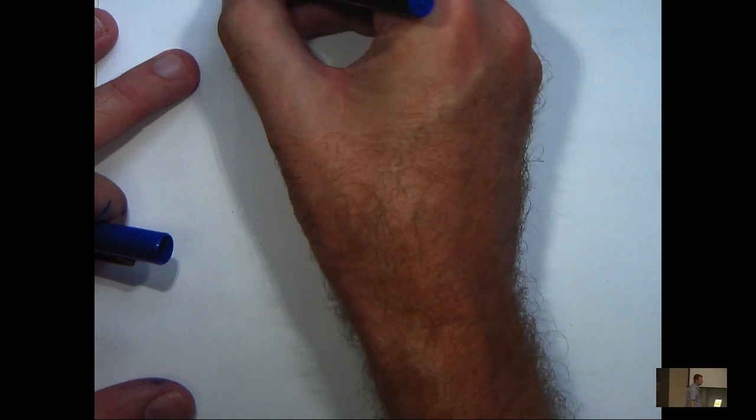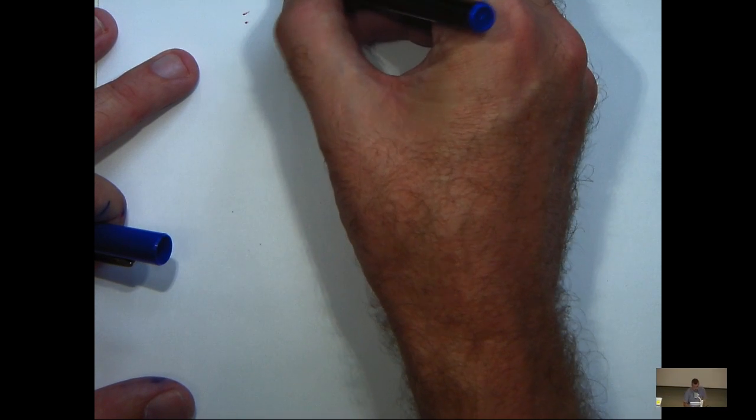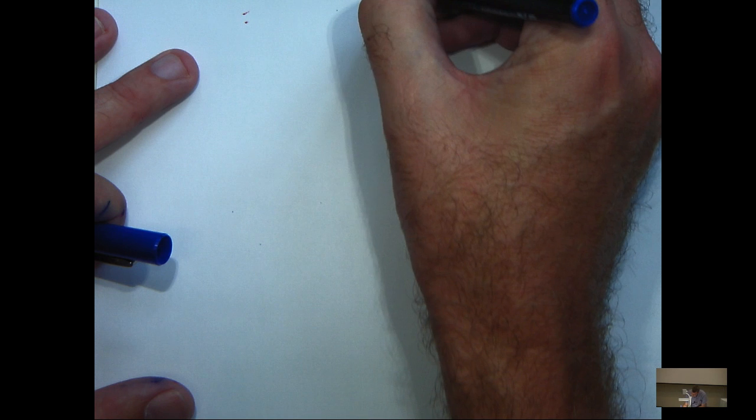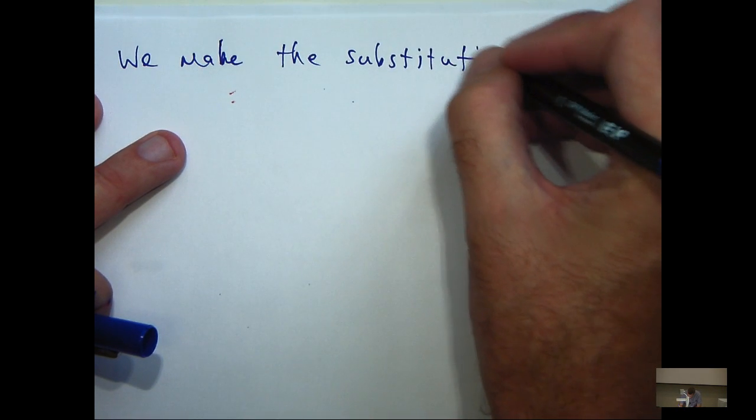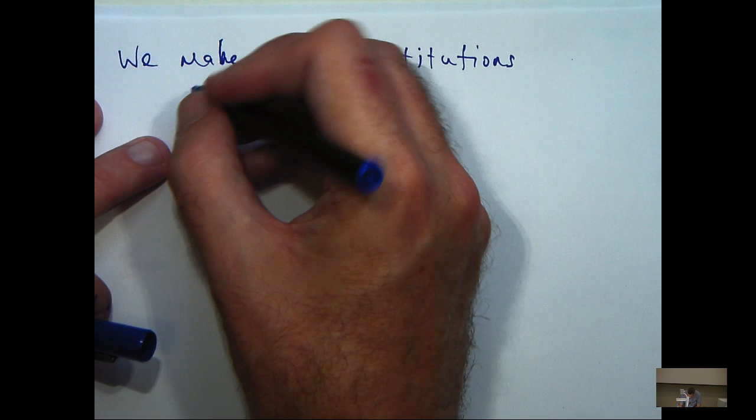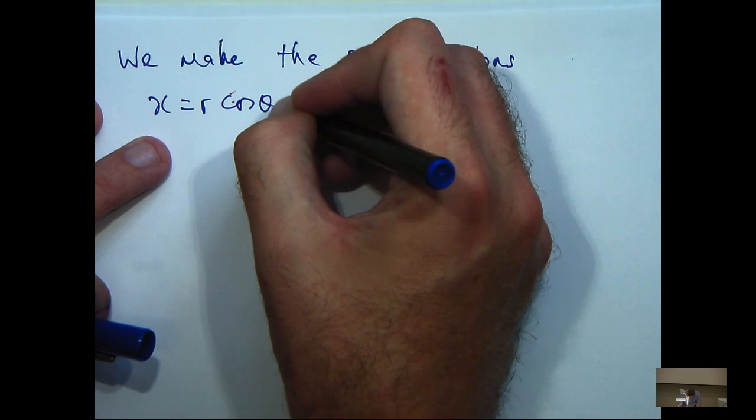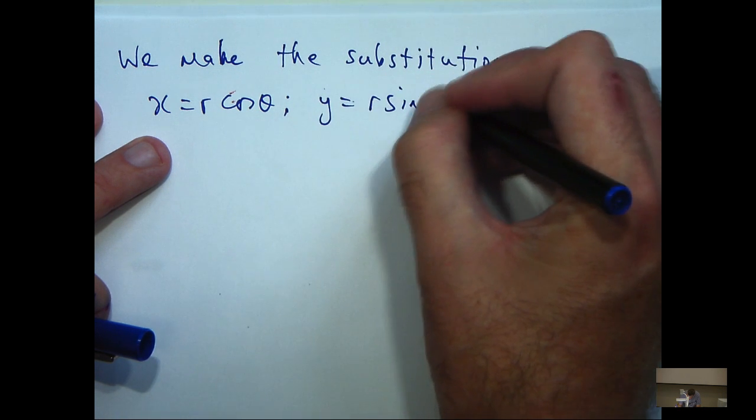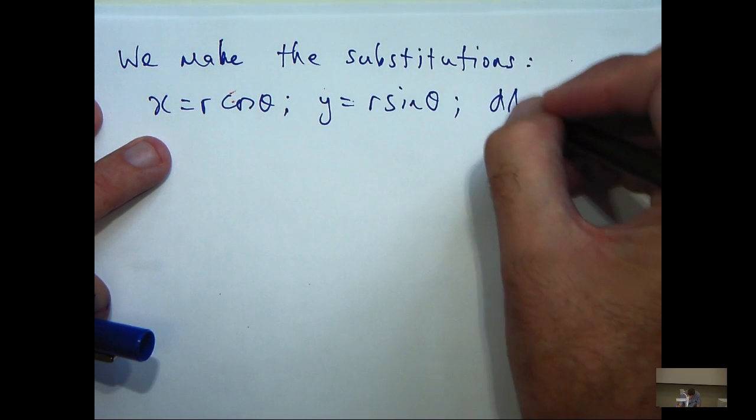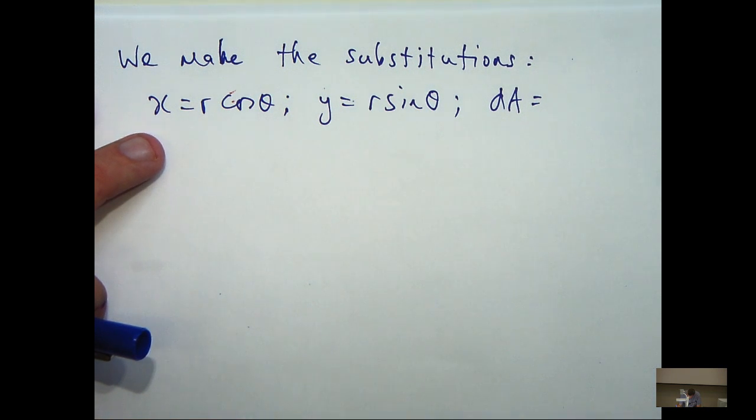So, this is the substitution. We make the substitutions: x equals r cos theta, y equals r sine theta. And dA, which can represent dx dy or dy dx, it's just the area element,